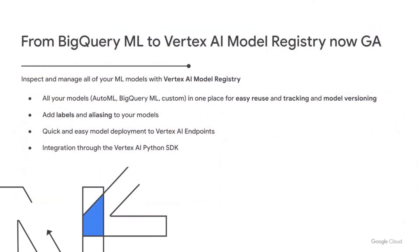We're happy to announce that model registry is now in GA. You can register any of your models — whether trained using AutoML, BigQuery ML, or custom models like scikit-learn, XGBoost, TensorFlow, or PyTorch — in model registry. Model registry lets you easily reuse models, use labels and aliases to keep track of your models, and version your models. You can deploy models to Vertex AI endpoints to push them into production and make predictions. There's also a fantastic Python SDK to help you use your models in model registry.